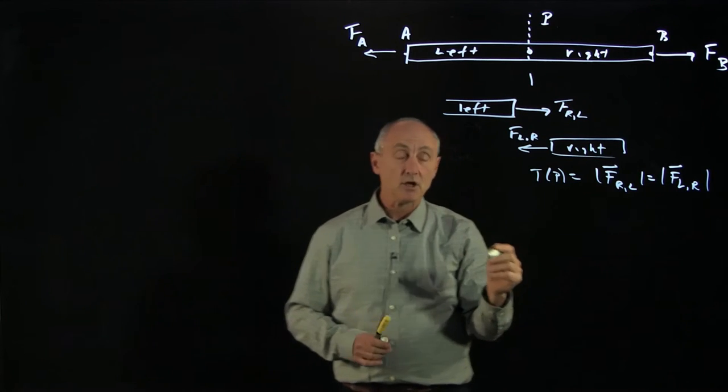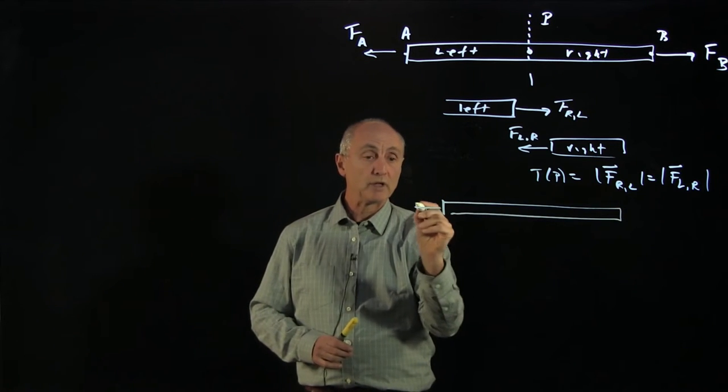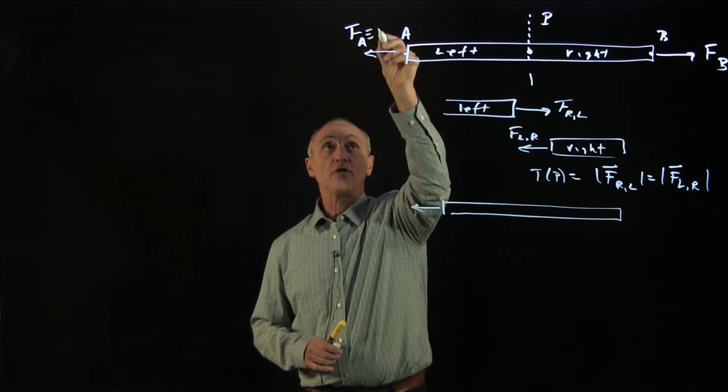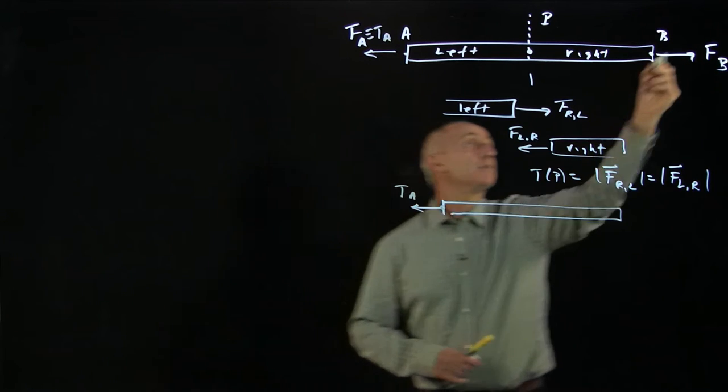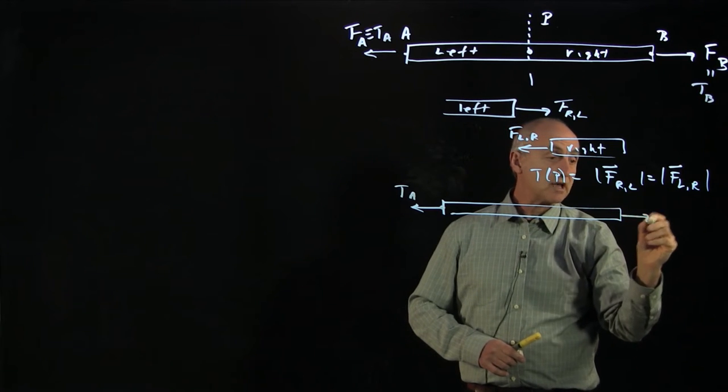So let's begin with the same situation as before. Let's consider a rope where we're pulling this side with a force at the end. By the way, we can call this the tension at that end, T of A. And on this side, we can refer to this as the tension on side B.